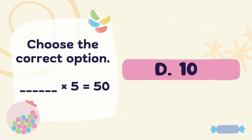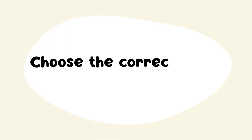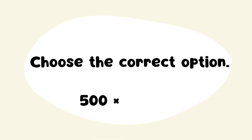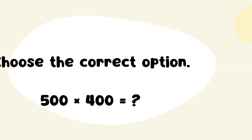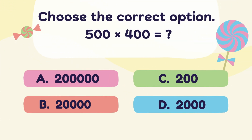The correct answer is Option D. 10. Next Question: Choose the correct option. 500 x 400 is equal to?